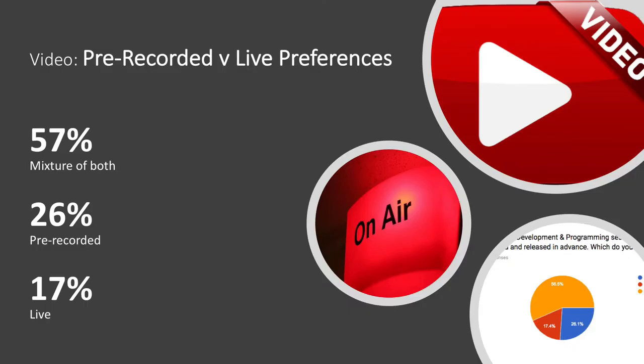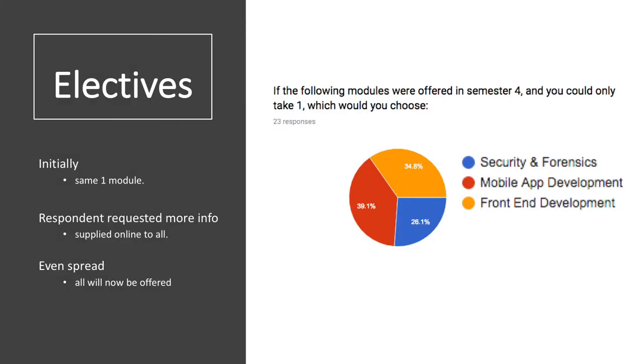For pre-recorded versus live preferences: 57% want a mixture of both, 26% like pre-recorded, and 17% prefer live. The important message here is it's not all about the live — the video is just as, if not more, important.